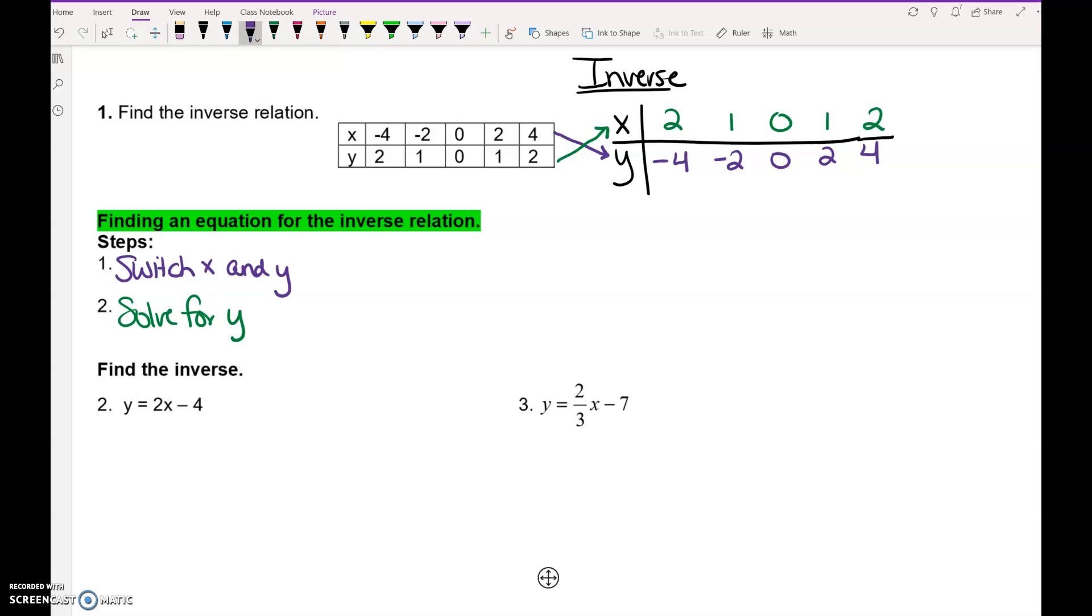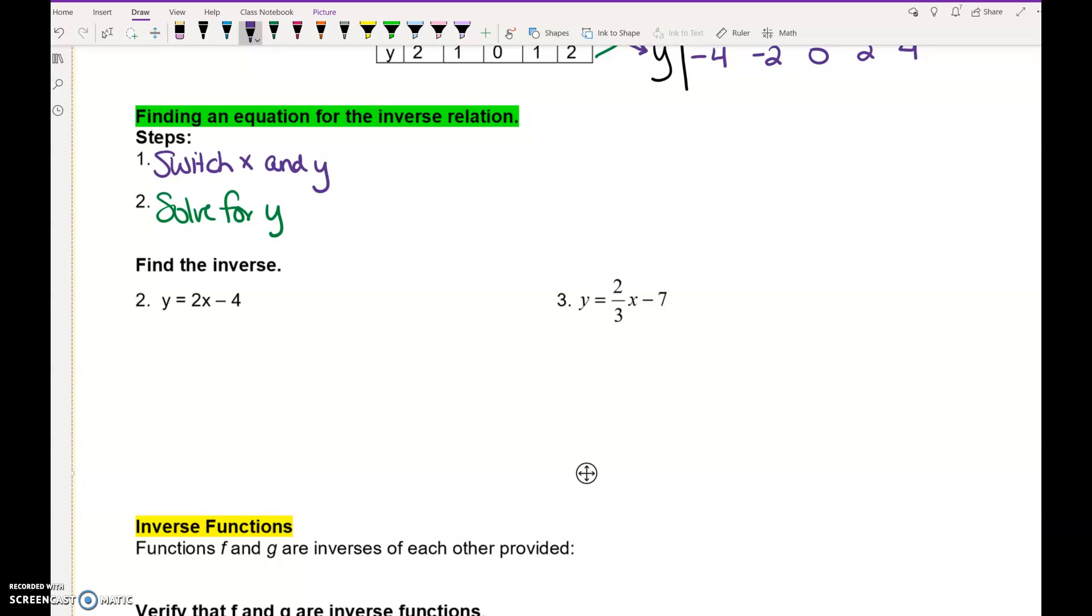So in number two, we have y = 2x - 4. Our first step is switch x and y. So the y becomes x, the x becomes y. Now we need to get y by itself. What do you think we should do first to get y by itself? Add 4 to both sides. So we have x + 4 = 2y. And then divide both sides by 2. So we have y = (x + 4) / 2.